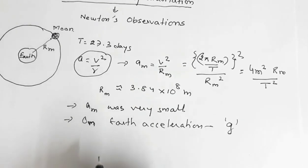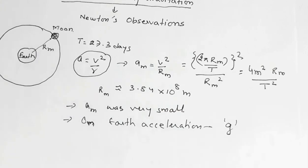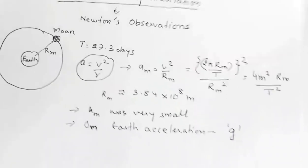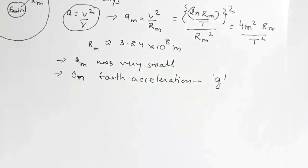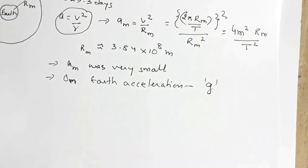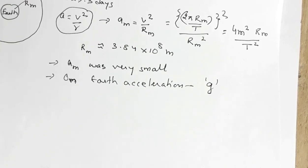From this, Newton concluded that acceleration is inversely proportional to distance. There is an inverse proportional relationship between acceleration and distance. If acceleration is inversely proportional to distance, then force must also be inversely proportional to distance.